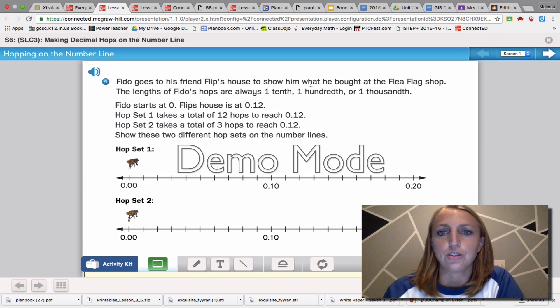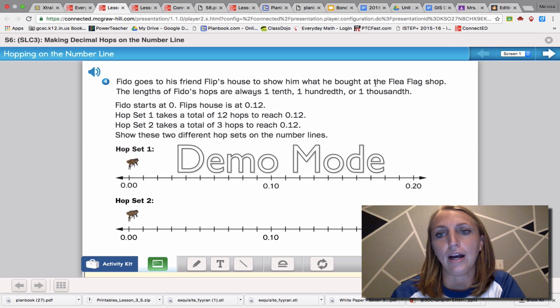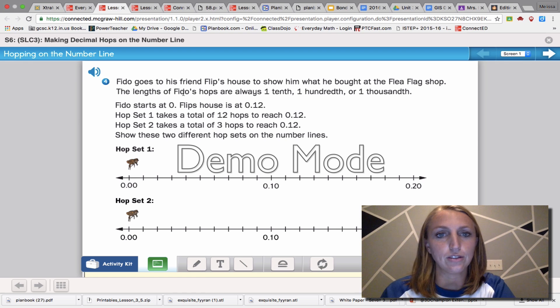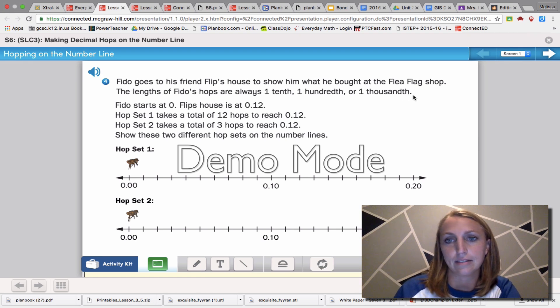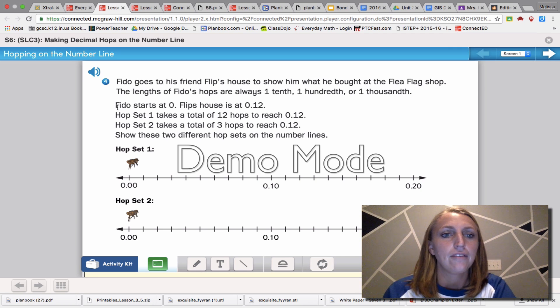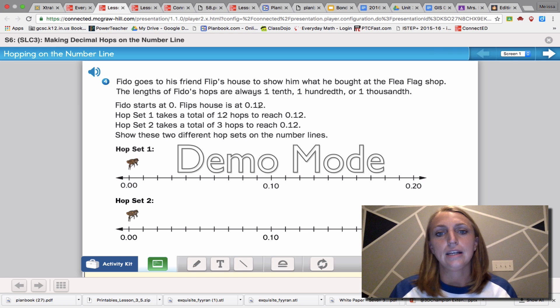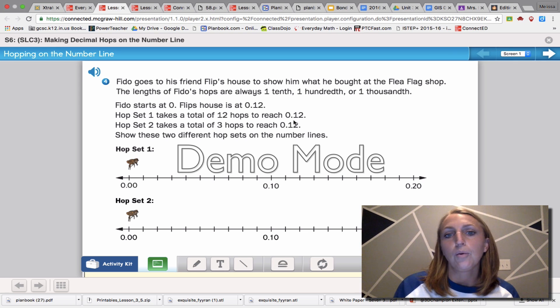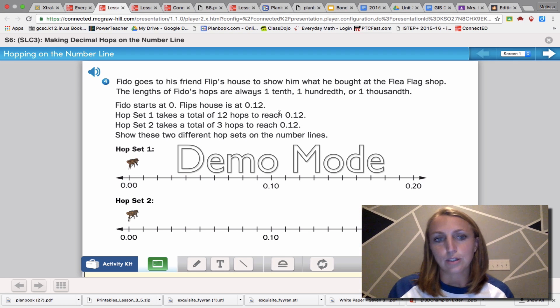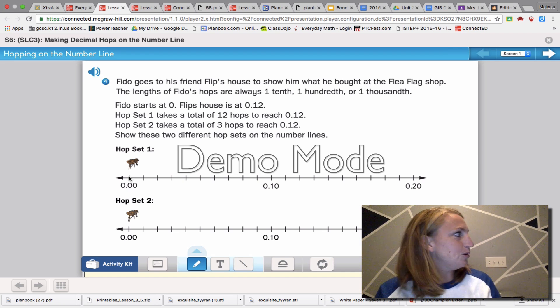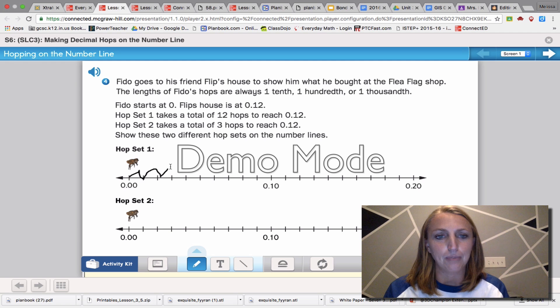Fido goes to his friend Flip's house to show him what he bought at the flea flag shop. The lengths of Fido's hops are always one-tenth, one-hundredth, or one-one-thousandth. Fido starts at zero. Flip's house is at twelve-hundredths. Hop set one takes a total of twelve hops to reach twelve-hundredths. Well, if we're taking twelve hops to twelve-hundredths, what are we going to have to do? Yep. You guessed it. We're going to have to take little hops.